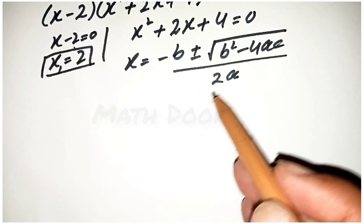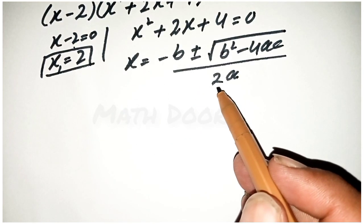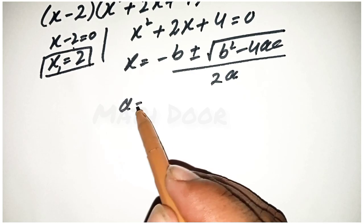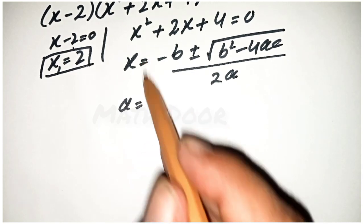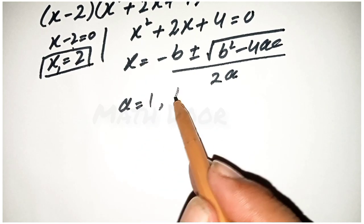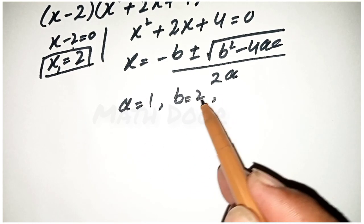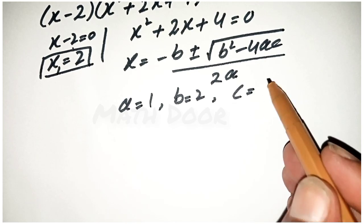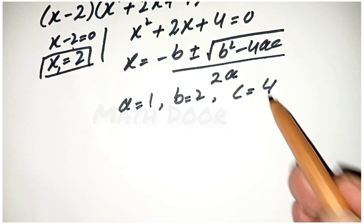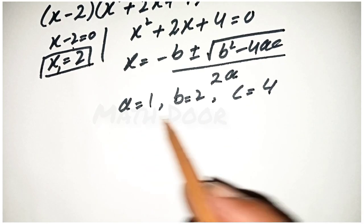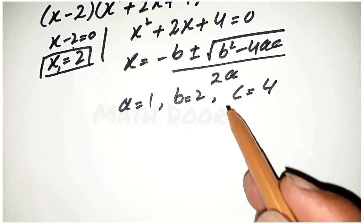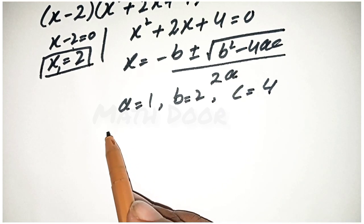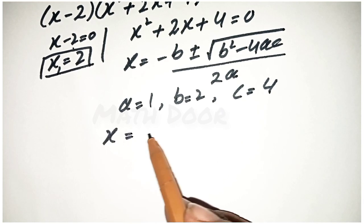Now, for this formula, we have the value of a which is 1, the value of b which is 2, and the value of c which is 4. We put these three values into the formula to solve our question.